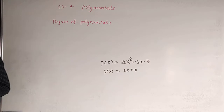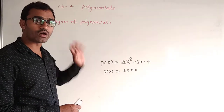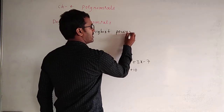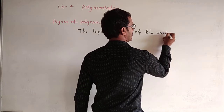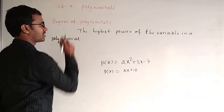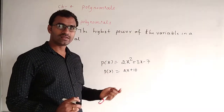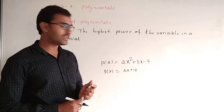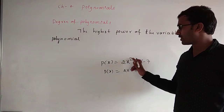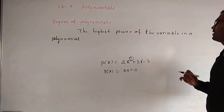The degree of polynomial is nothing but the highest power of the variable in a polynomial. The highest power of the variable in a polynomial is called the degree of that polynomial.